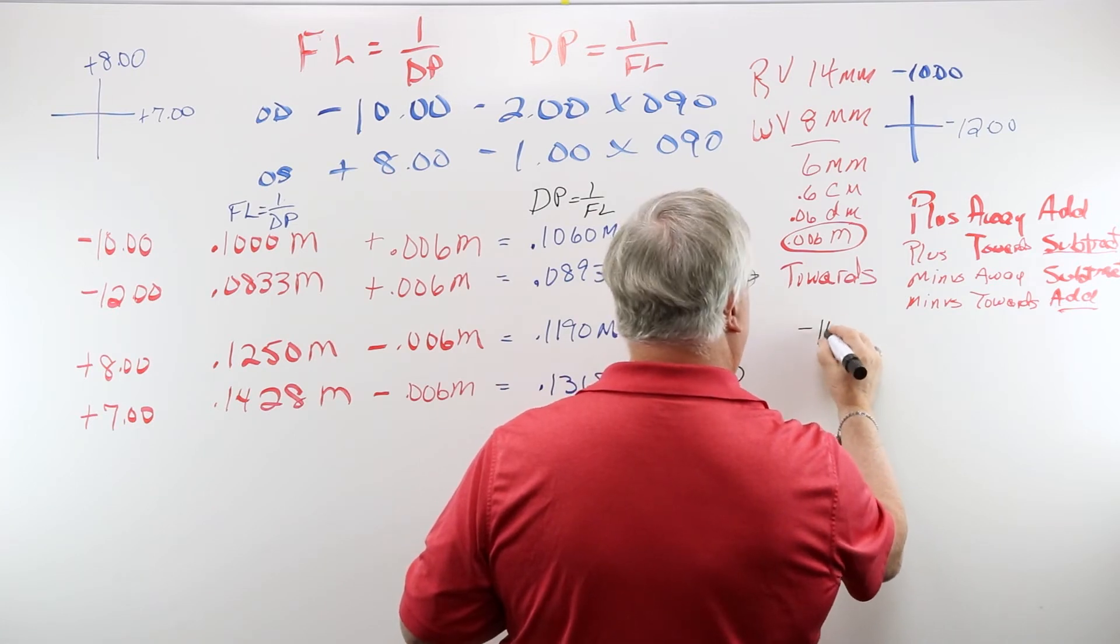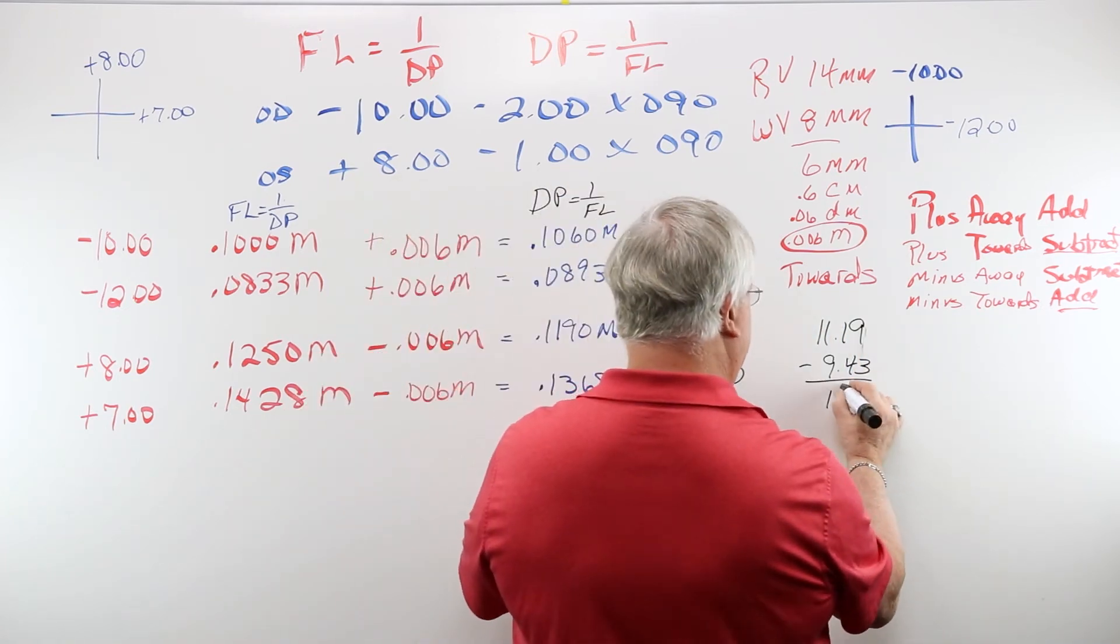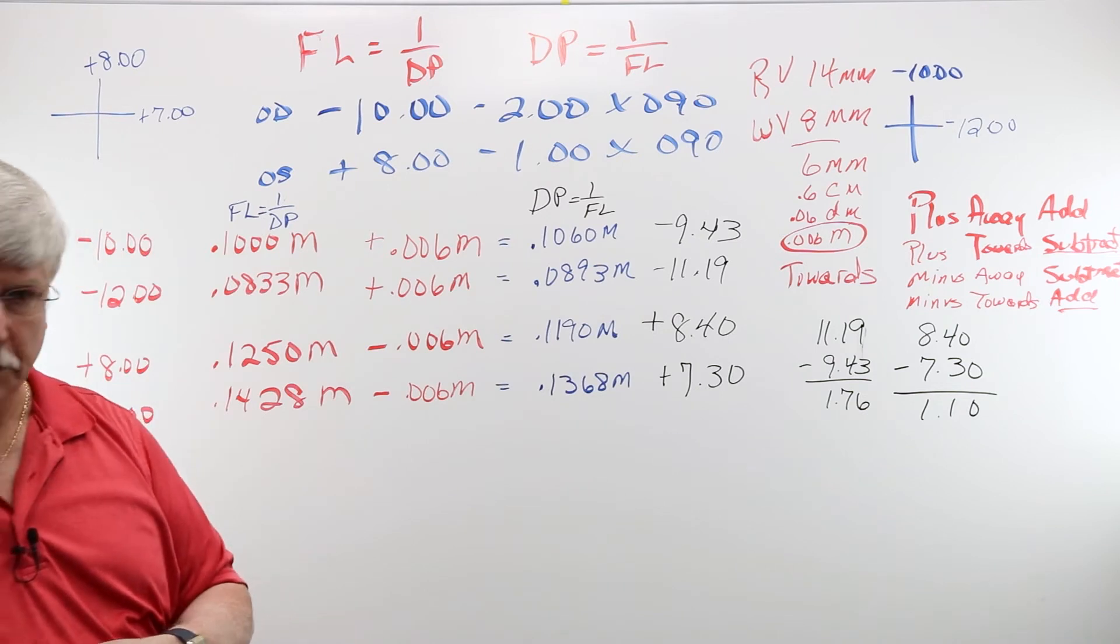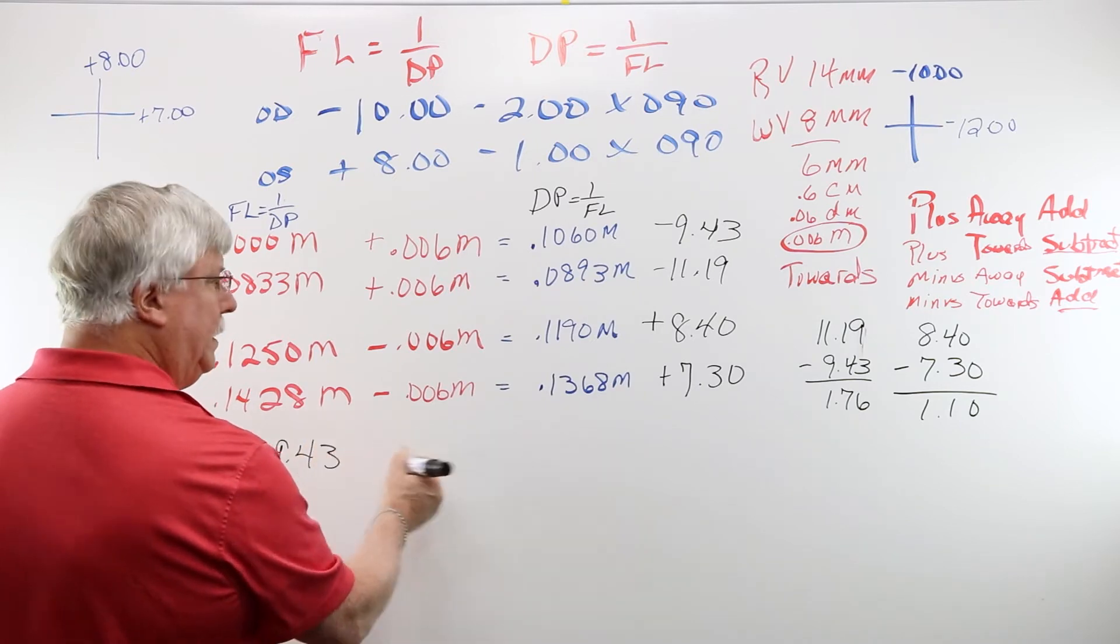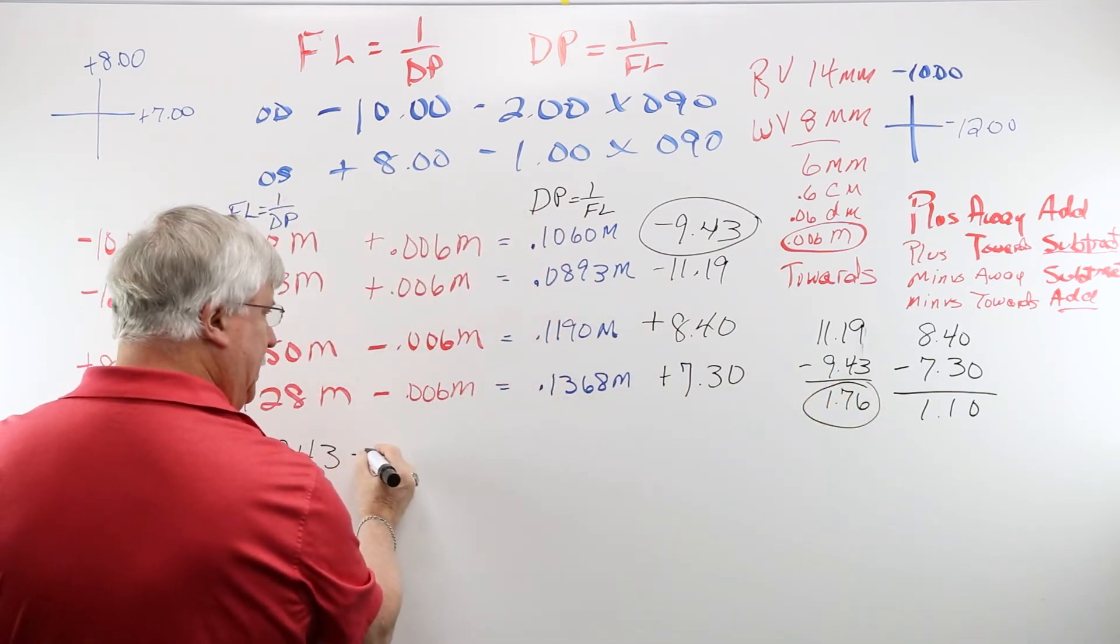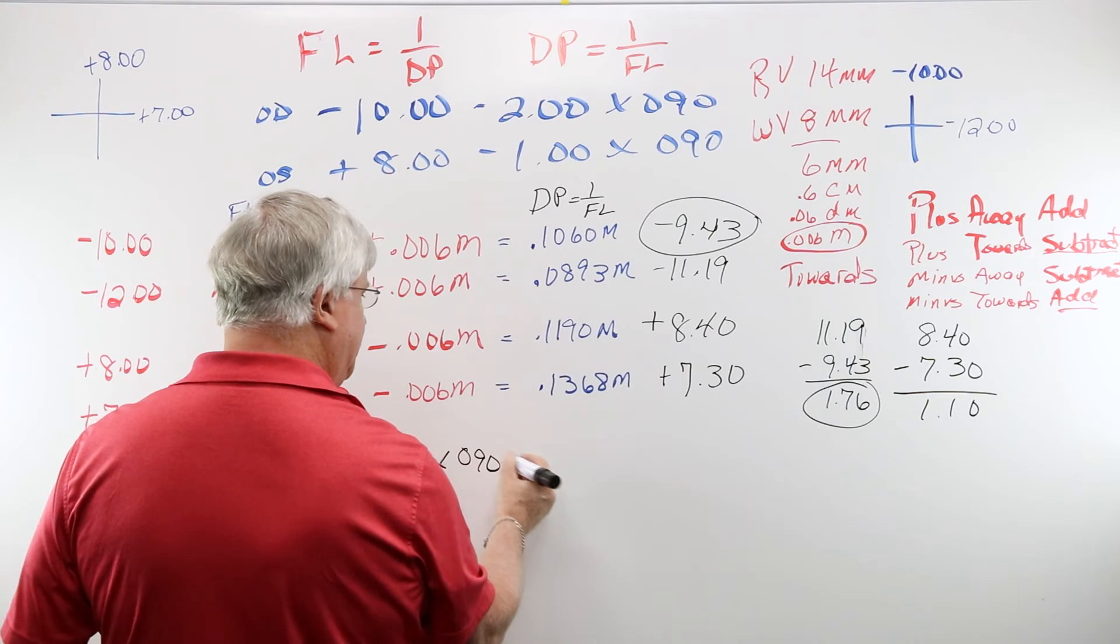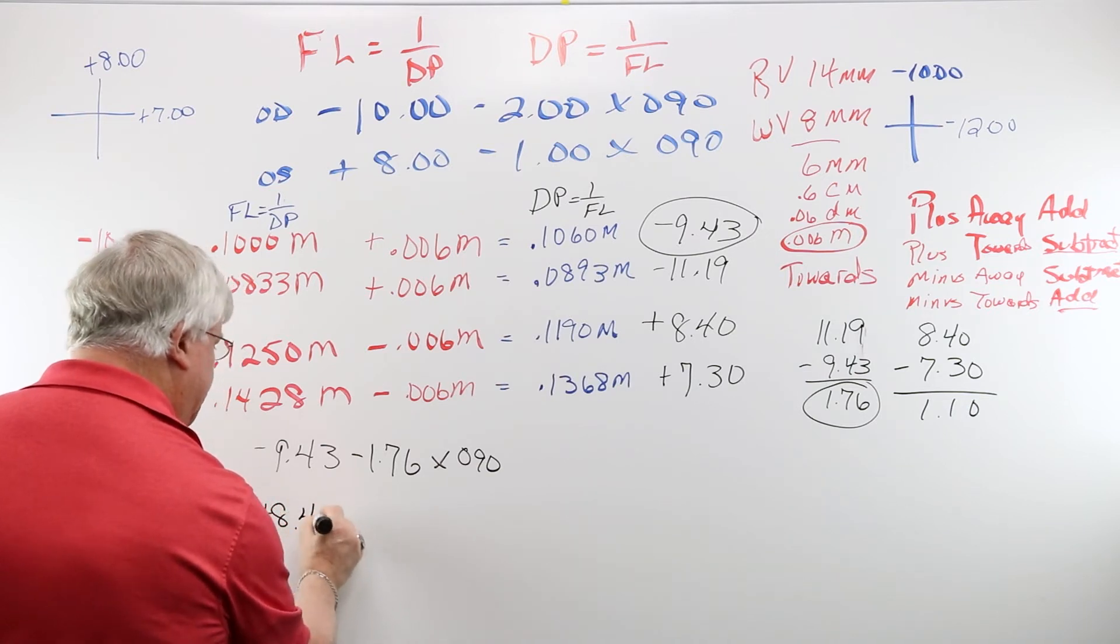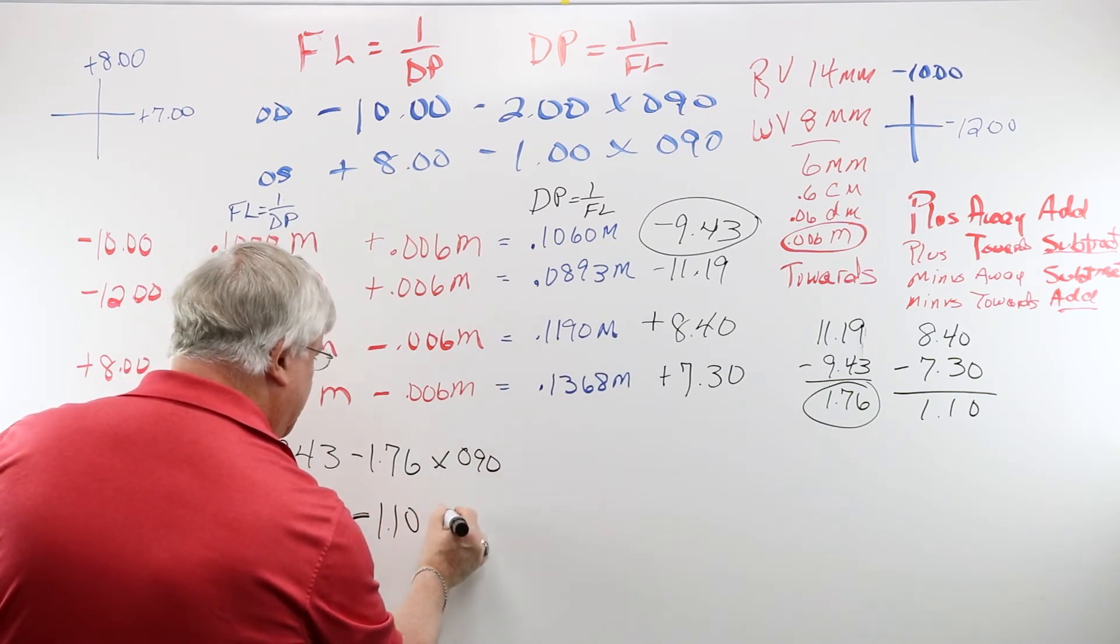Minus 11.19. My compensated prescription turns out to be minus 9.43, which is this one here. My cylinder power is minus 1.76 and it was at axis 090. For the left eye, it would be plus 8.40 minus 1.10 at axis 090.